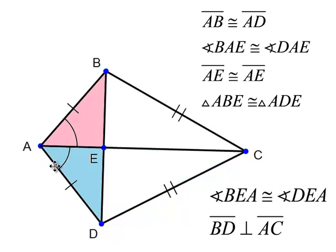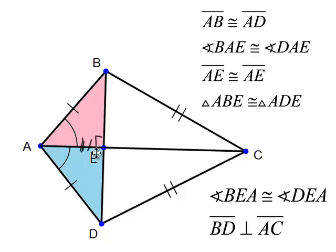Focusing in: if AE is congruent to itself, then we can say this triangle is congruent to that triangle by Side-Angle-Side. Once that's established, we can say that this angle is congruent to that angle. Since they form a linear pair, they must both be 90 degrees.